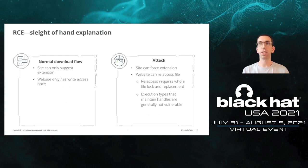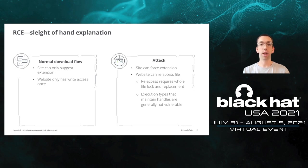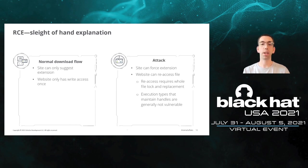The key difference between a normal download and the File System Access API attack: in a normal download, the site can only suggest the extension and has write access only once. With the File System Access API, the site can force the extension and — most critically — can re-access that file. Although the API does require a full file lock and replacement, when command prompt executes a batch script it opens the file, reads a line, closes the file, executes the line, then re-opens — so the lock is never held continuously by the interpreter, meaning the website's brief lock to edit it doesn't conflict with script execution.